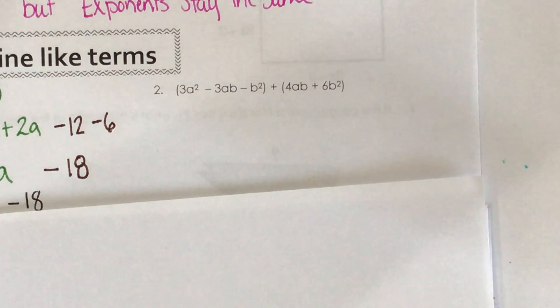So let's take a look at this example. 3a squared minus 3ab minus b squared plus 4ab plus 6b squared.